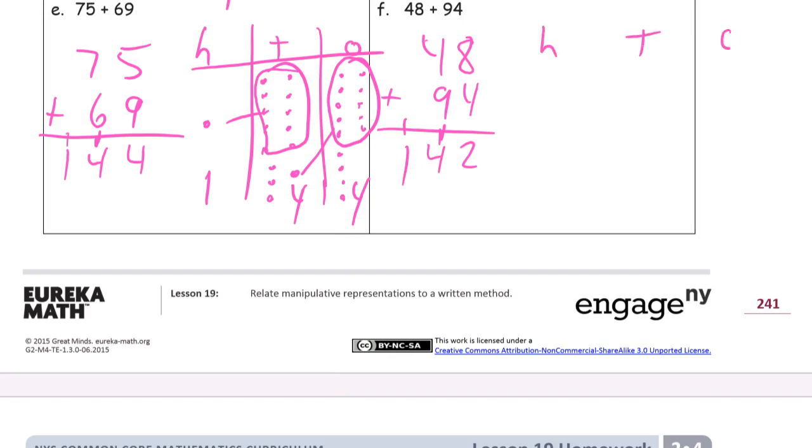H, T, O. And we start with the 48. Now, mentally, you can look at this and say, I need 6 more to make that 94 a 100. So that would leave 42 left and be 142. I mean, mentally, again, there's an example how you can take some from one of the addends to make it an easier number to add.